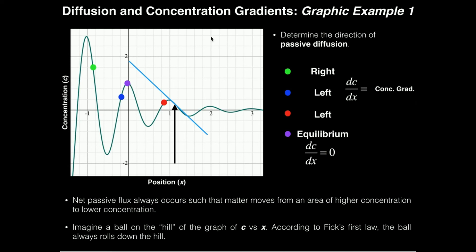So hopefully this gives you a good graphical illustration of Fick's first law of diffusion and how you can use this graph to determine the direction of net flux. In fact, if you actually were given a function for concentration relative to position, if you actually took its derivative and evaluated it at a certain position x, you could determine the sign of it and determine the direction of net flux. But this is how you do it graphically.